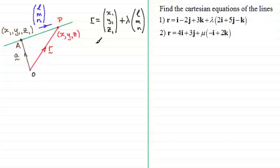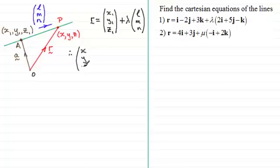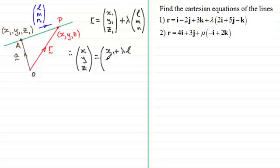Now to work out what the Cartesian form is going to be, we know that this position vector R would be x, y, z as a column vector, and it would satisfy this equation. So if we put x, y, z in as a column vector, that must satisfy the sum of these two vectors. Grouping them, we get x1 plus lambda l, y1 plus lambda m, and z1 plus lambda n.